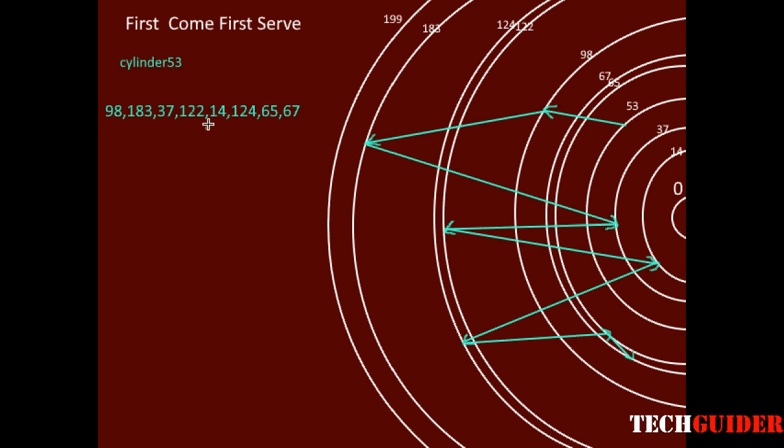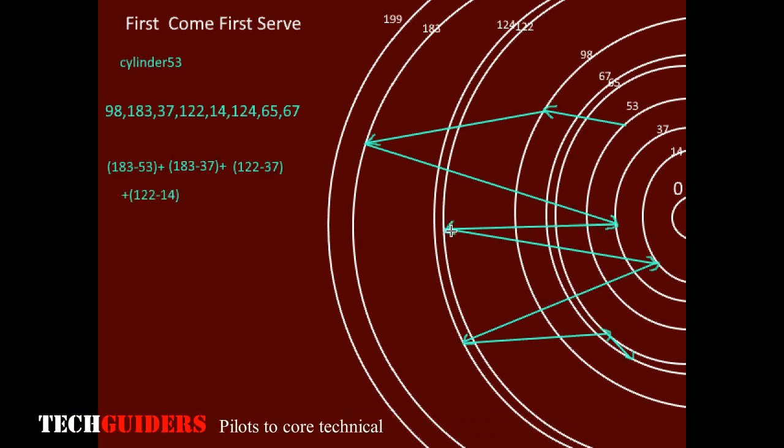So to service all these requests, total how many cylinders have to be crossed by the read-write head? Here 98 minus 53 cylinders plus 183 minus 98 cylinders first in this direction, otherwise we can calculate it as 183 minus 53 cylinders in this direction. And from here to here it is 183 minus 37 cylinders, then 122 minus 37 cylinders, then 122 minus 14 cylinders.